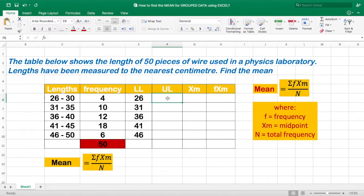And for the upper limit, we have 30, 35, 40, 45, and 50. So since we already have the lower limit and the upper limit, let us find for the midpoint.